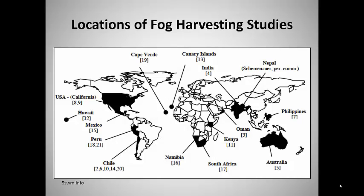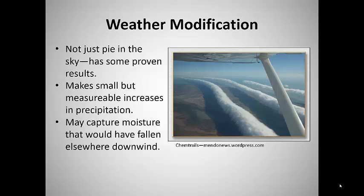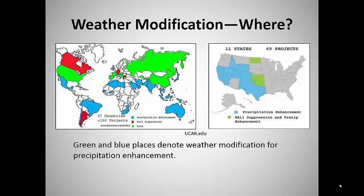This map shows locations where fog harvesting studies have been conducted. The idea of modifying weather to create more clouds and rain has been around for as long as there have been rain dances. In recent decades, the technology of seeding promising skies with silver iodide crystals has made significant progress. Sophisticated monitoring and modeling studies show that it can produce small but measurable increases in precipitation. Critics can say the process captures moisture that might have fallen as precipitation someplace else farther downwind. Nonetheless, weather modification to enhance precipitation is routinely practiced in 11 U.S. states and 33 countries. The countries shown in red use weather modification in efforts to suppress hailstorms.